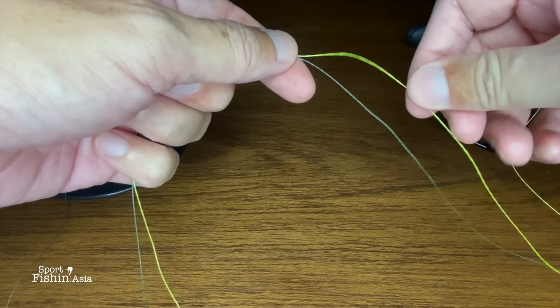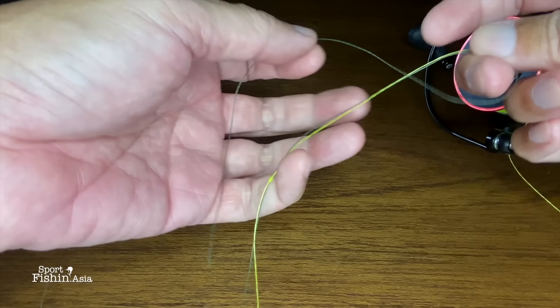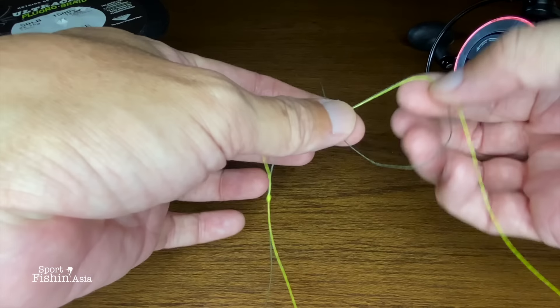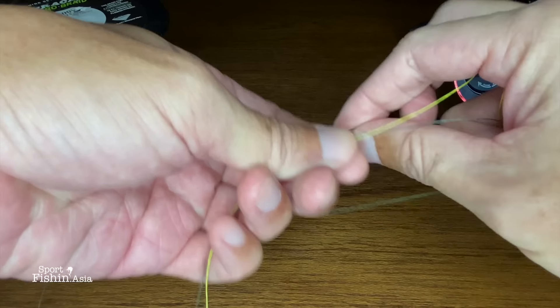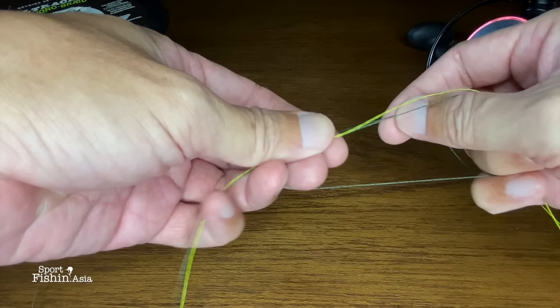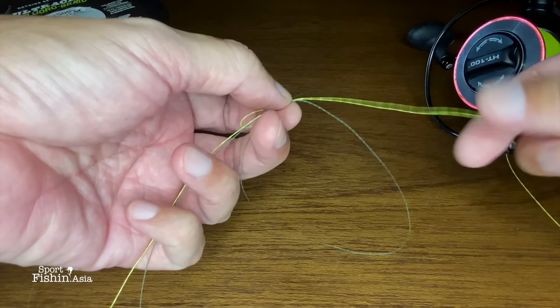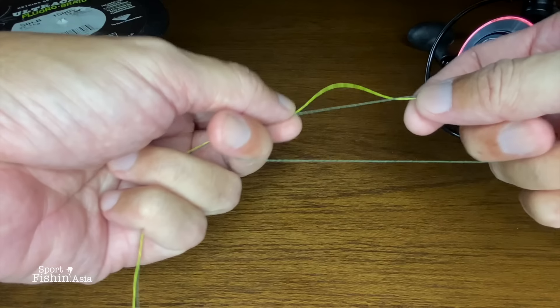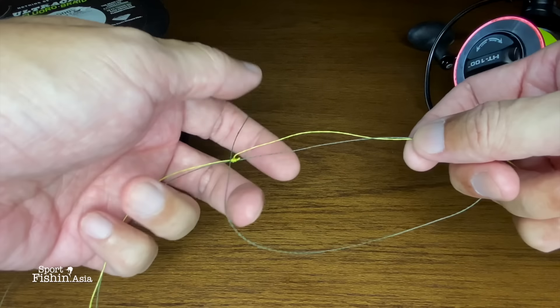Then you do the same knot on the other side. Again, make a loop. Now this knot is best for lines that are the same or about the same diameter.